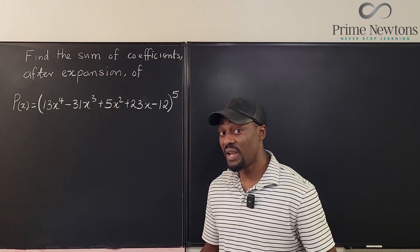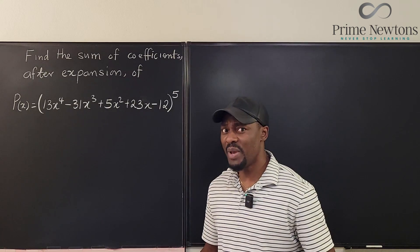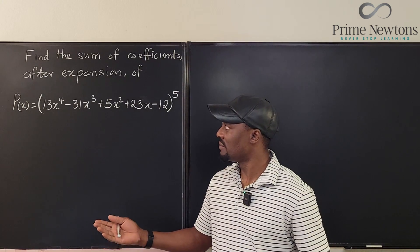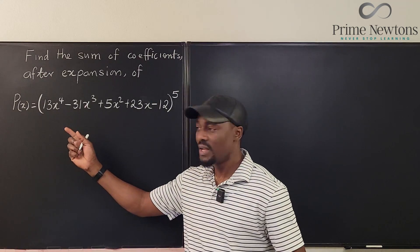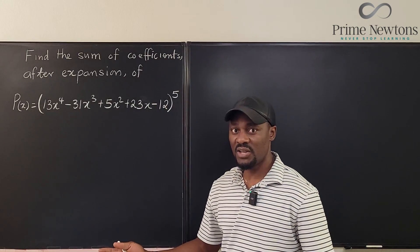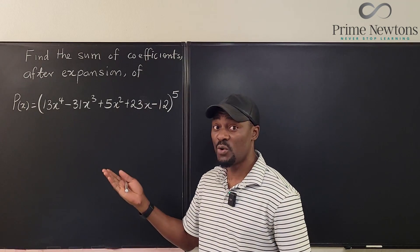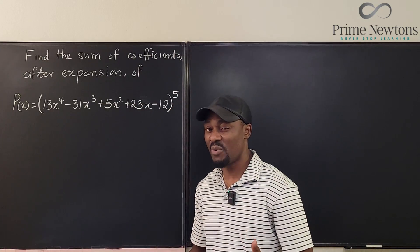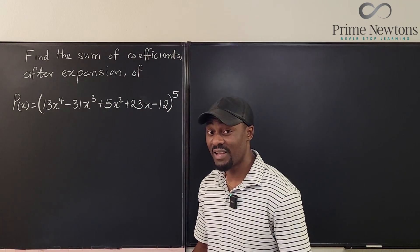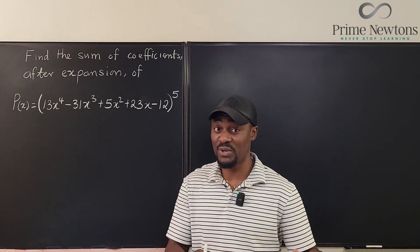So what exactly is the trick? Well, it's basically plugging in one. Because when you plug in one, the X, it's as if the X is not there. And whatever would happen to the coefficient when you raise everything to the fifth power is exactly what would happen after you expand it. And I'm going to use some simpler examples for you to see.